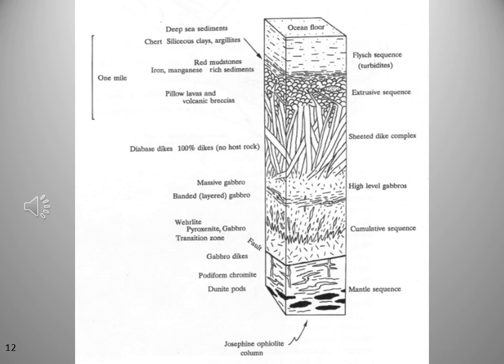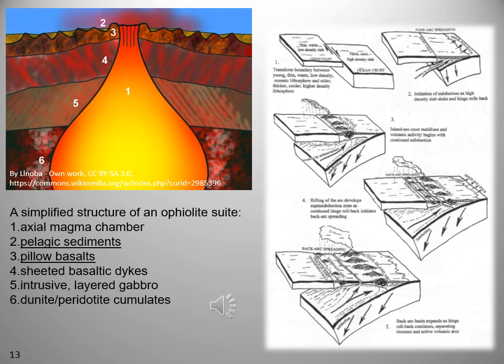Basalt, gabbros, and related ultramafics are typically altered to form low-grade metamorphic rocks such as greenstone and serpentinite. The latest thinking is that whole ophiolite suites usually form in back-arc spreading centers adjacent to active volcanic arcs and in proximity to continental land masses.